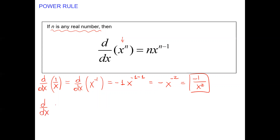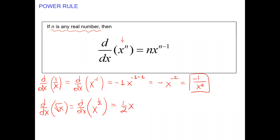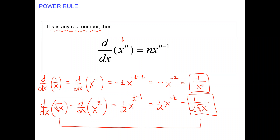Similarly, √x can be rewritten as x^(1/2). Applying the power rule: the exponent 1/2 becomes the coefficient, and we get (1/2)·x^(−1/2), which equals 1 over 2√x. We did this derivative twice through the limit definition, and the power rule confirms it. That's our recipe — use it, but always think.